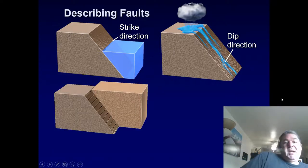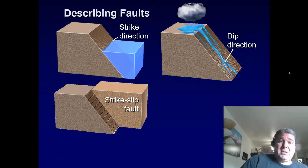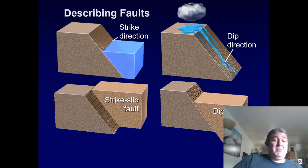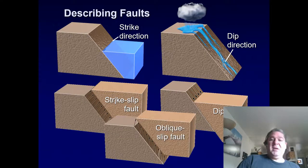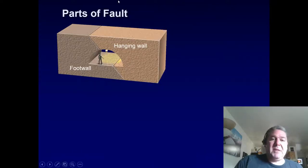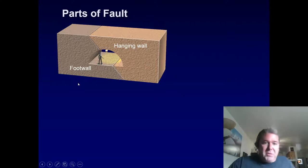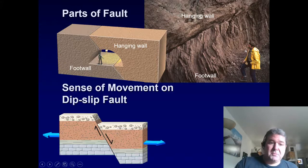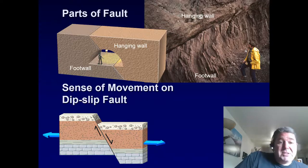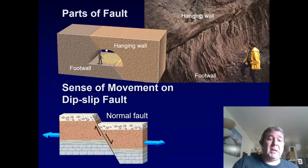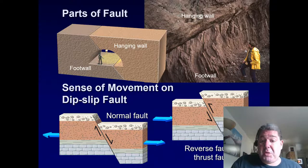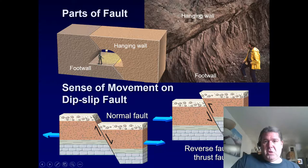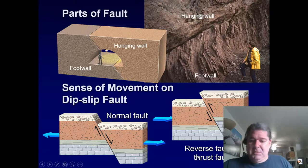We can have slip along strike — strike-slip or transform boundary faults — or slip along dip, which gives us normal and reverse faults. We can also have oblique-slip faults with both components. Parts of a fault: the hanging wall is the part above the fault plane; the foot wall is below. Their relative movement determines whether it's a normal fault (tension, extension) or a reverse fault (compression, shortening). A thrust fault is a large, low-angle reverse fault.